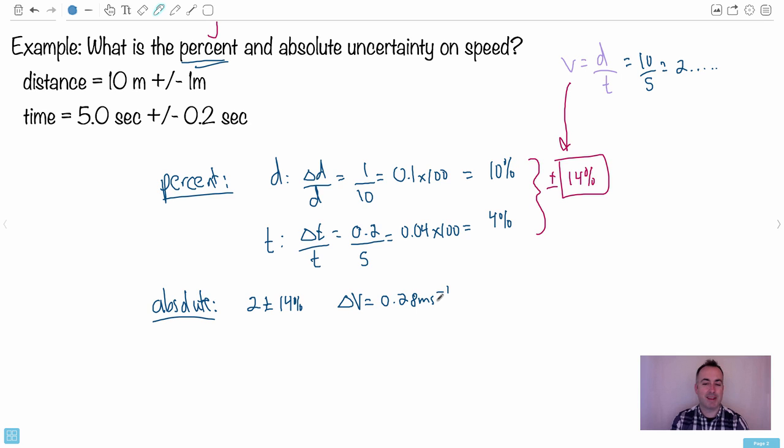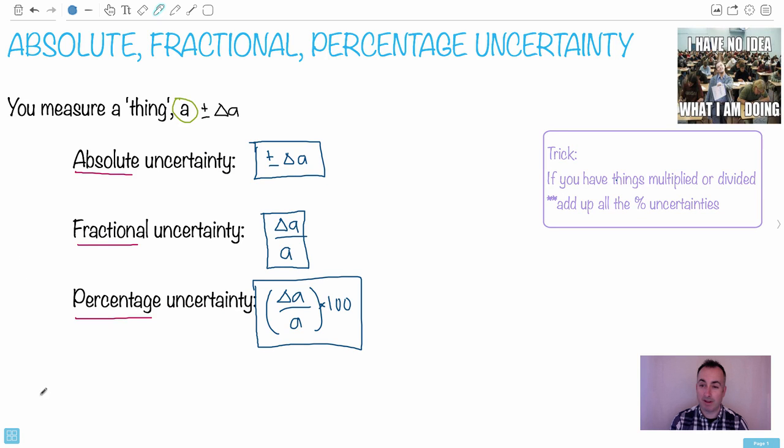But do you remember what you have to do? Your uncertainty has to have one non-zero number. So in this case, I'm going to change it then to make it delta V is 0.3 meters per second. This is my uncertainty on the speed, the absolute uncertainty. If I really wanted to write everything correctly, I would have written it like this, that the speed is actually 2.0, because now I know I'm only allowed one after the decimal, plus or minus 0.3 meters per second. So this is how I would write the speed. I hope that makes some sense. So for calculating these, really important for paper 3. Really, really important.